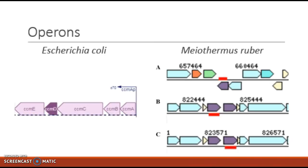Thinking about all of these related genes, you'd expect they might be close to each other within the genome, and that's true. If the consecutive locus tags didn't give it away, on the left is an image taken from EcoCyc of the operon for E. coli. Starting at CCM-A, translation will not stop until it has encoded CCM-B, CCM-C, CCM-D, CCM-E, CCM-F, CCM-G, and CCM-H.